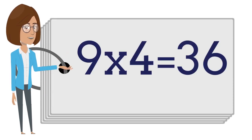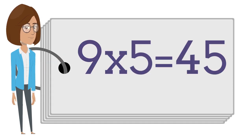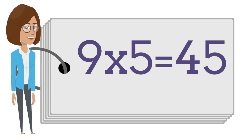Nine times four is thirty-six. Nine times five is forty-five.